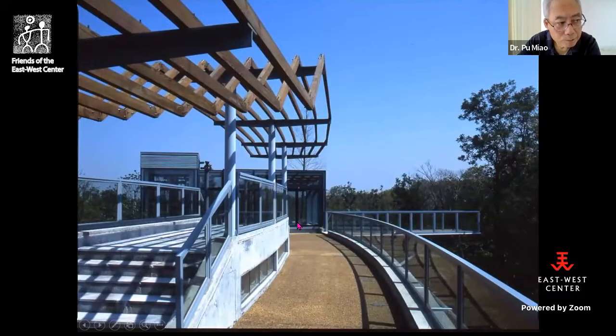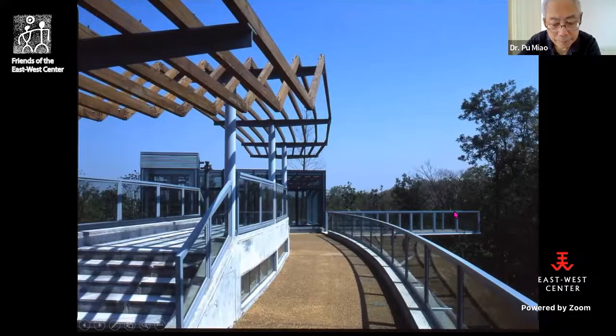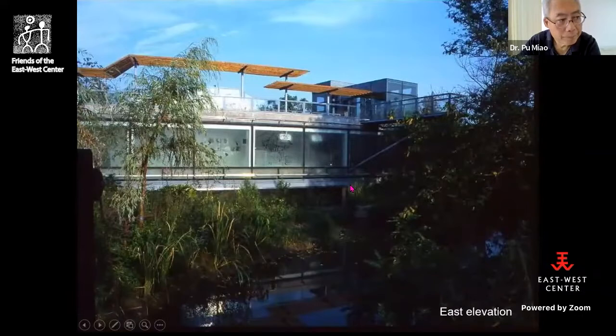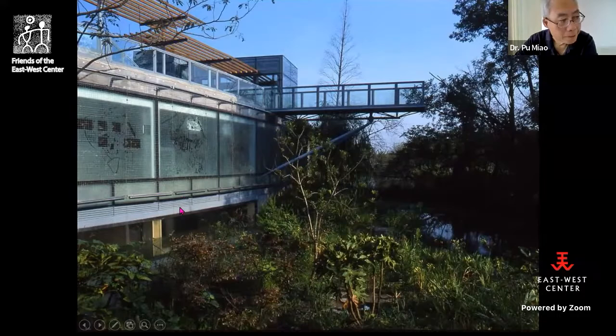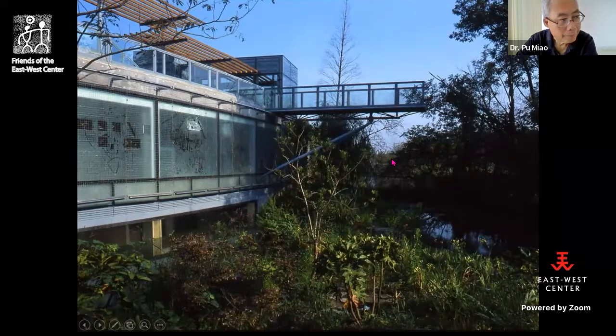Finally you come to the roof deck and see the panoramic view of the wetland, with an observation deck for a closer look. This is the east elevation of the building — you can see the building is almost submerged into the water. Here you see the first floor, the second floor, and the roof deck, with the wildness of the wetland beyond.